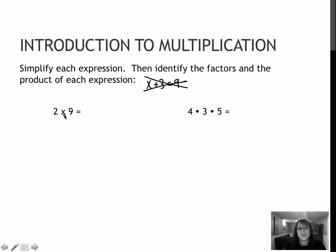So for the first one, two times nine means that two is happening nine times, or that nine is happening two times. So again, if you need to start with the addition of nine happening twice to get 18, you're welcome to do that.